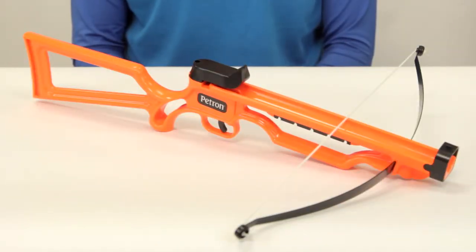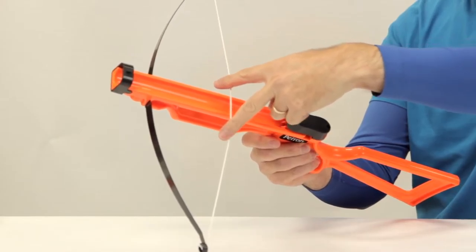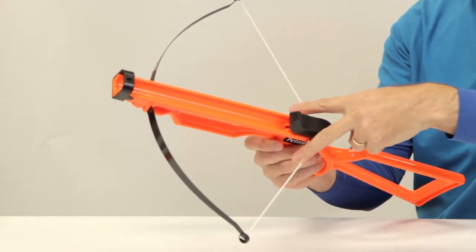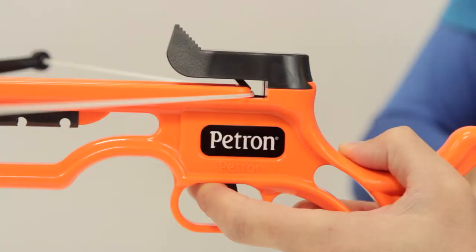Now let's see how to charge, load and shoot the bow. To charge the bow draw the string back with two fingers one either side of the bow body so that the string drops into the slot at the back of the barrel.